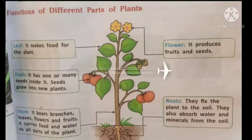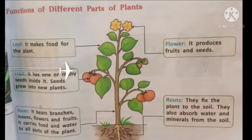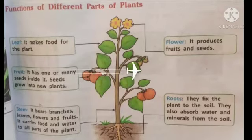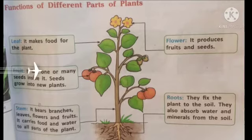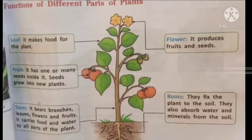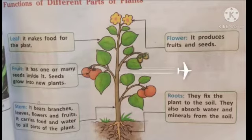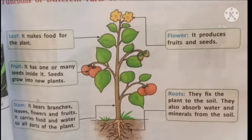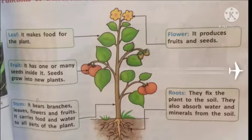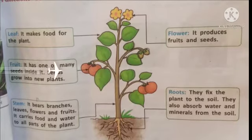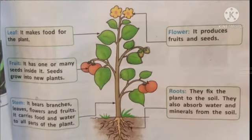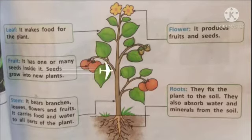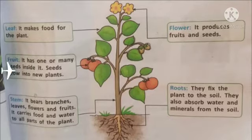First, the leaf — it makes food for the plant. Second, the fruit — it has one or many seeds inside it, and seeds grow into new plants. Third, the stem — it bears branches, leaves, flowers, and fruits, and carries food and water to all parts of the plant. Fourth, the flower — it produces fruits and seeds. Fifth, the roots — they fix the plant to the soil and also absorb water and minerals from the soil.